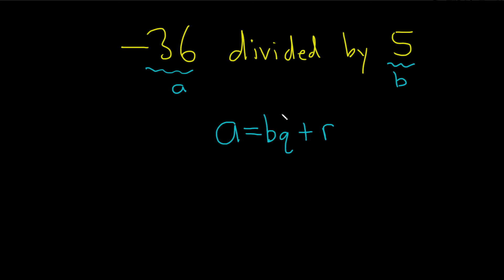So step two after writing the equation down is to perform the division. Negative 36 divided by 5. I'm going to put this in my calculator and see what I get. I got negative 7.2.